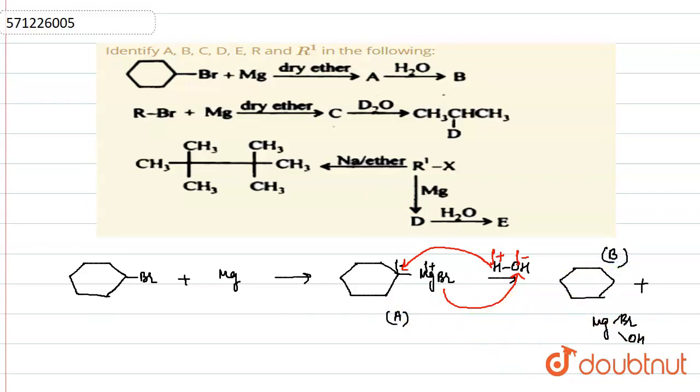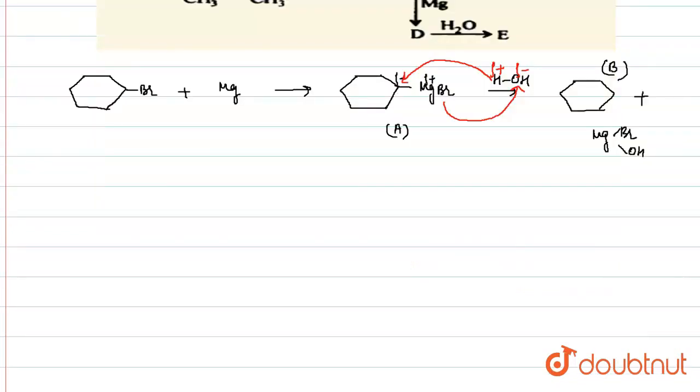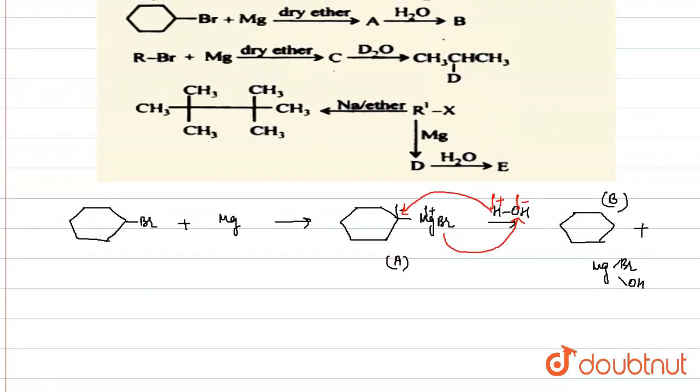So, this is our group A and our group B will be cyclohexane. Next we are given with RBr. On this group, magnesium is added in the presence of dry ether to form compound C.